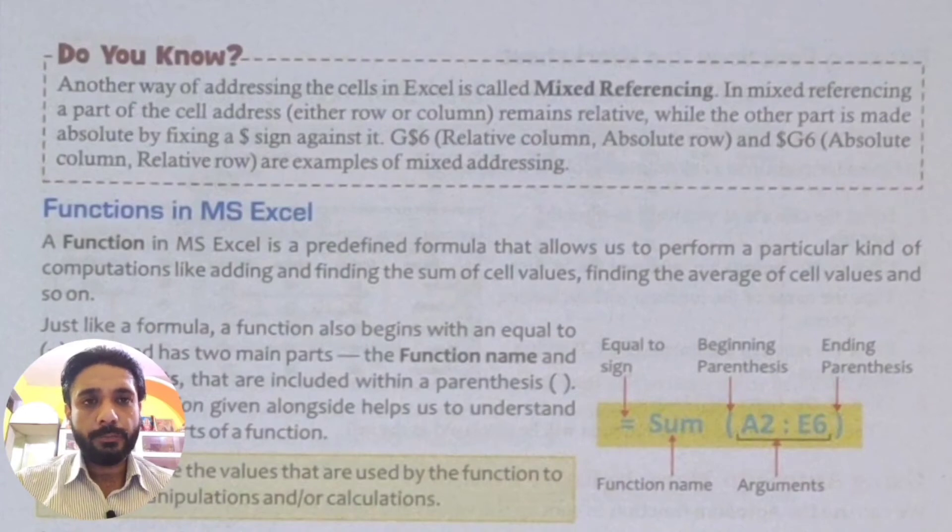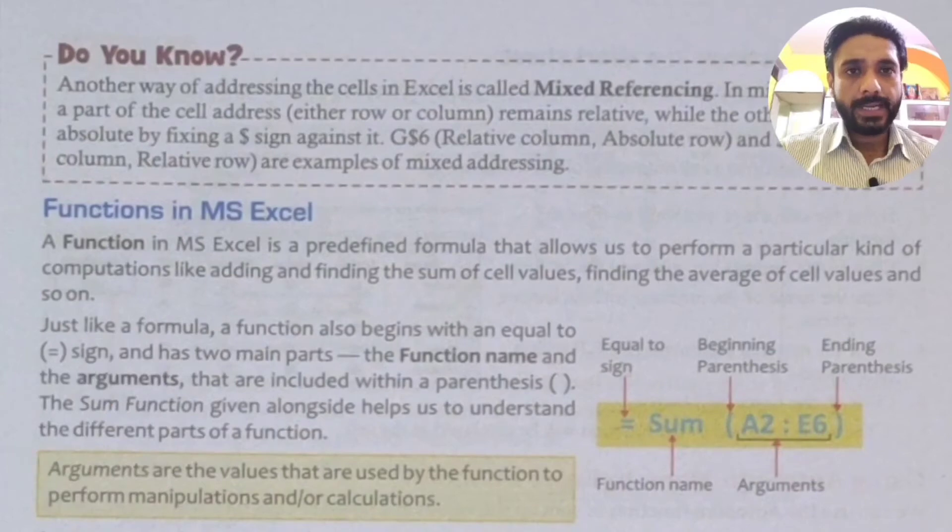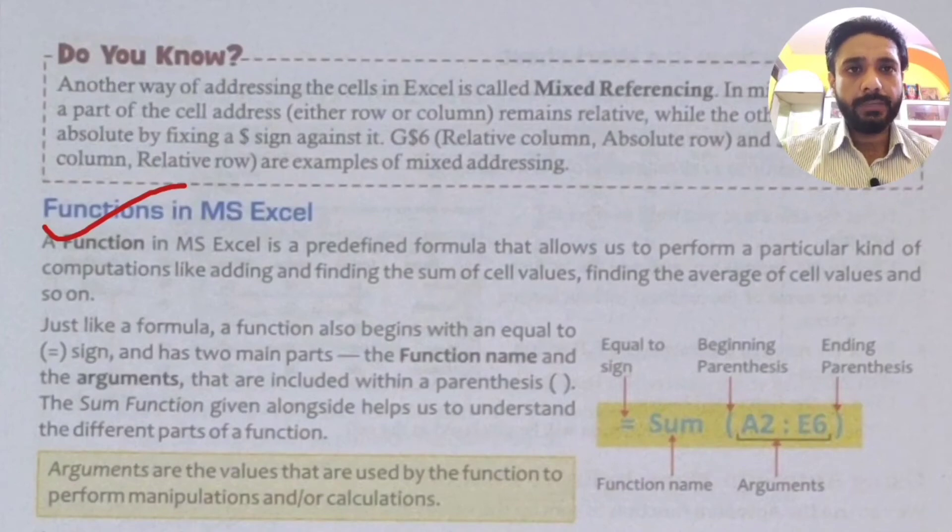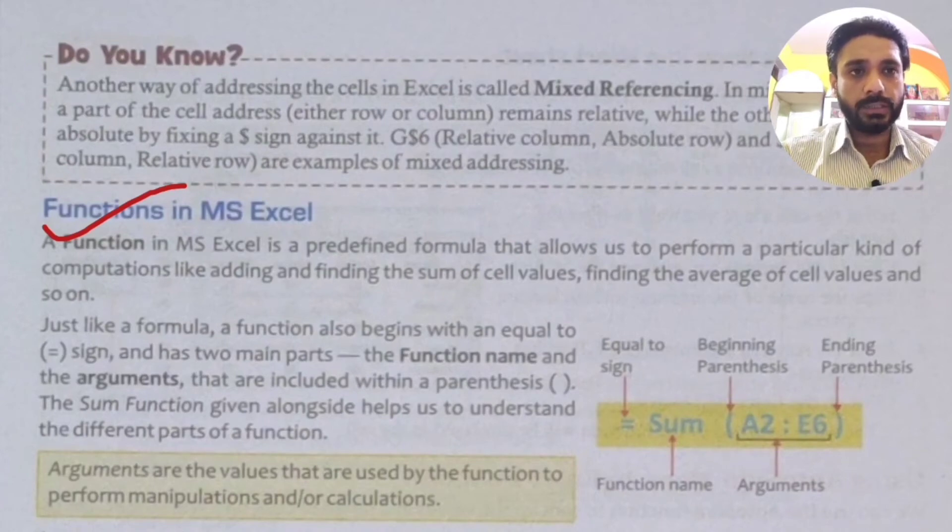Our next heading is functions in MS Excel. What is the meaning of function? A function in MS Excel is a predefined formula that allows us to perform a particular kind of computation like adding, finding the sum of cell values, finding average of cell values and so on. So our functions and formulas are predefined. And this gives us a facility that we can implement computational work in Excel. Now there are some rules and regulations in Excel. I have told you in the last class in practical session that I will give a link to the I button. So we can see that practically we can use it, in which way we can use it. Then I will explain in which way we can write the function in Excel.